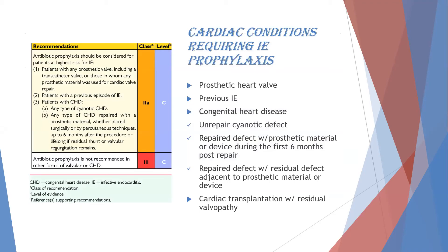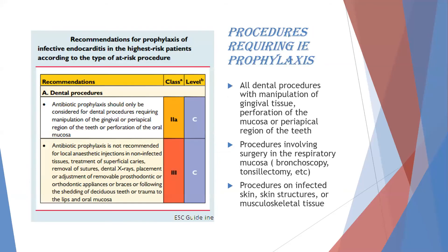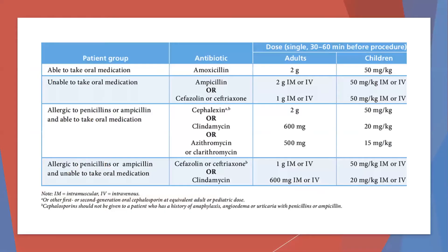Cardiac conditions requiring prophylaxis per recent guidelines include prosthetic heart valve, previous infective endocarditis, congenital heart disease, and cardiac transplantation with residual valvulopathy. Procedures requiring IE prophylaxis include all dental procedures with manipulation of gingival tissue, perforation of oral mucosa, procedures involving surgery in respiratory mucosa, bronchoscopy or tonsillectomy, and procedures of infected skin, skin structure, or musculoskeletal tissue.